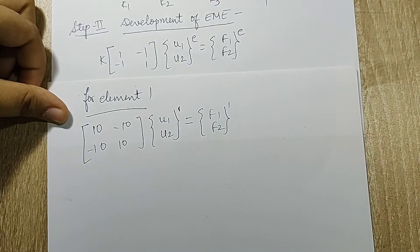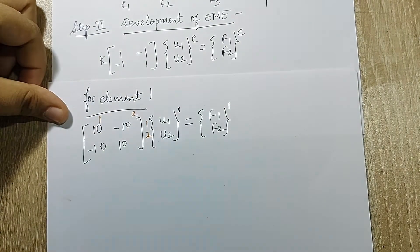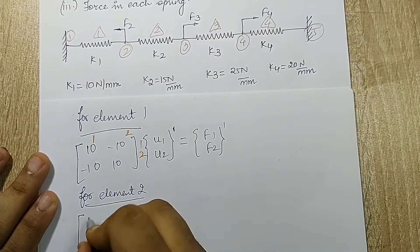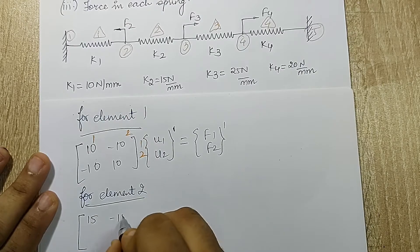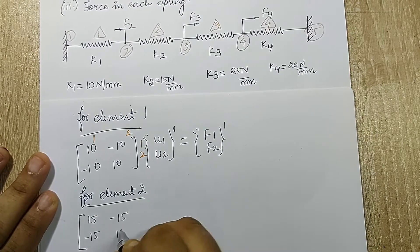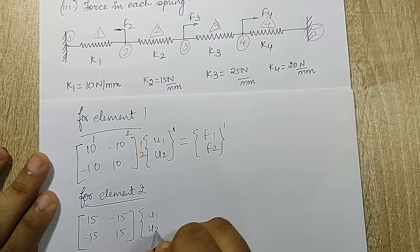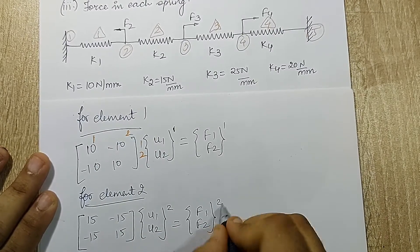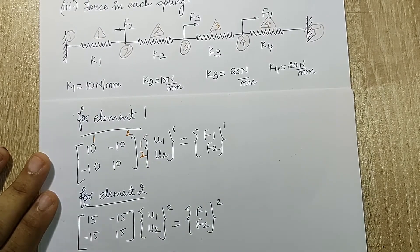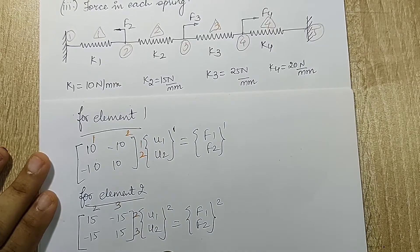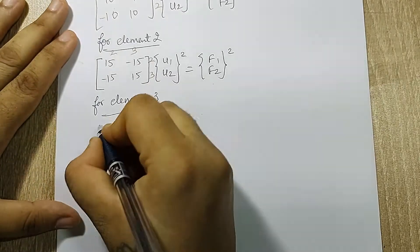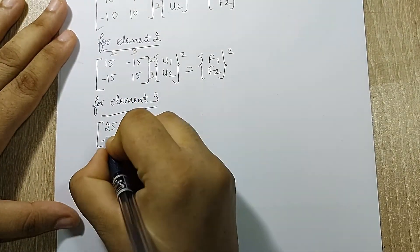Element one is between nodes one and two. For element two, the value of K is 15, so the multiplying factor is 15; element two is between nodes two and three. For element three, the value of K is 25, so the multiplying factor is 25.